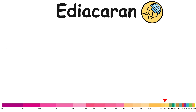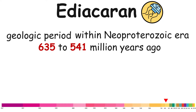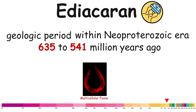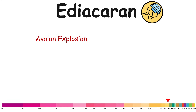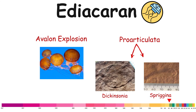Ediacaran. The Ediacaran is a geologic period within the Neoproterozoic era, spanning approximately from 635 million to 541 million years ago. The Ediacaran marks the first widespread appearance of complex multicellular fauna following the end of the Cryogenian. The relatively sudden evolutionary radiation event known as the Avalon Explosion is represented by now-extinct, relatively simple, soft-bodied animal phyla such as Proarticulata, like Dickinsonia and Spriggina.